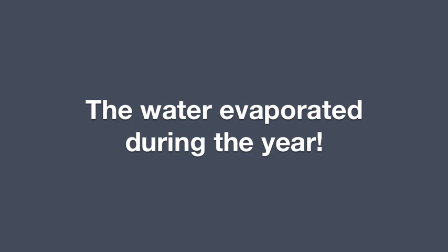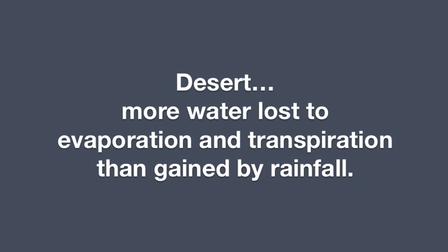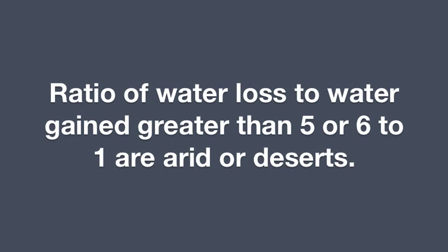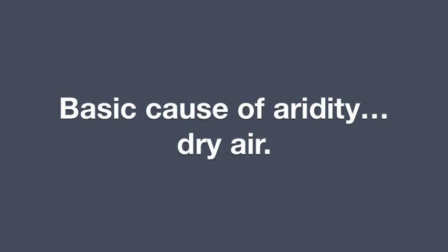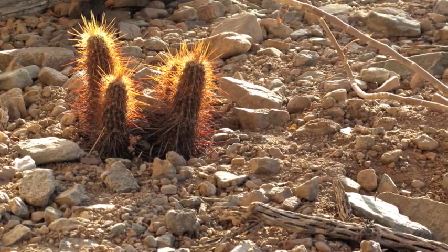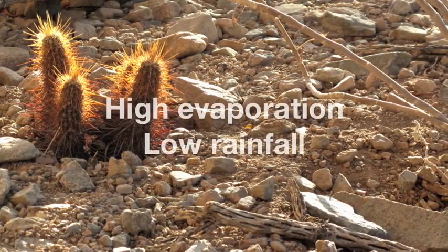What happened? The water evaporated during the year. In fact, that's the definition of aridity — what we commonly think of as a desert. Deserts are places where there's much more water lost to evaporation and transpiration by plants than water gained from rainfall. Places where the ratio of water loss to water gain is greater than 5 or 6 to 1 are arid. The basic cause of aridity is dry air, which quickly evaporates any available water and doesn't provide much precipitation — causing both high evaporation and low rainfall.